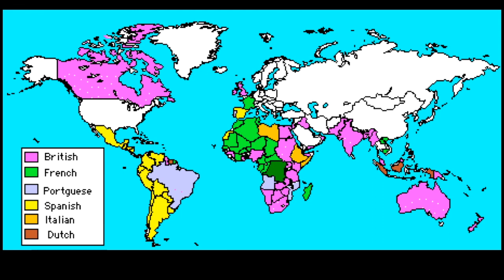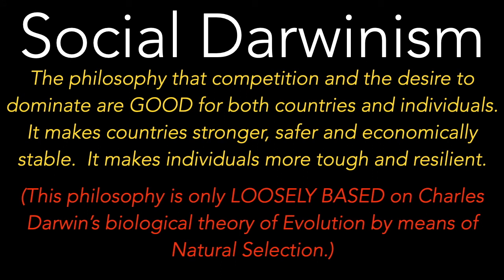When we talk about the late 19th century, it's important to understand that many European countries had conquered so much of the world that the late 19th century is really the story of European domination. Britain alone controlled one-fifth of the world's population in the year 1900, and these European countries were caught up in competition to see who could rule more of the world. An important term associated with that competition is Social Darwinism.